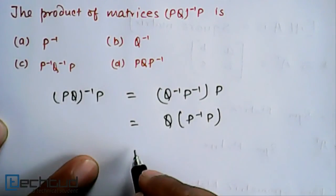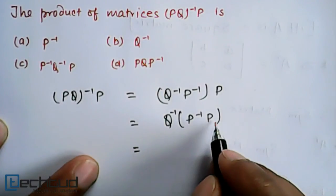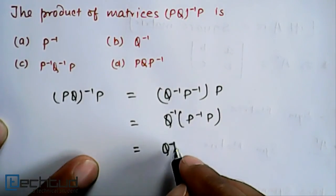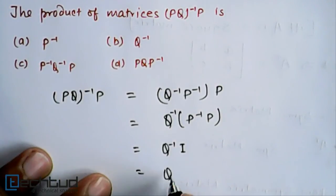Now P^(-1) times P equals the identity matrix. So this will be equal to Q^(-1).